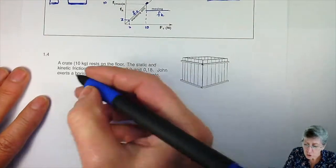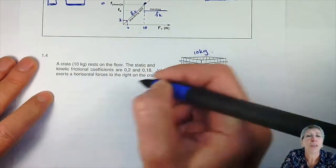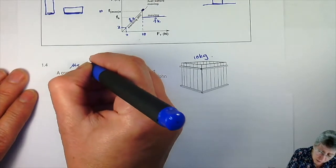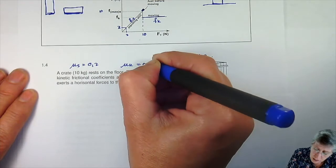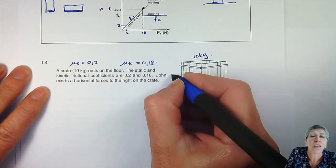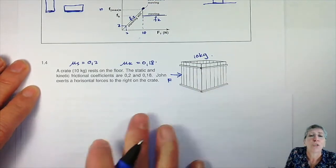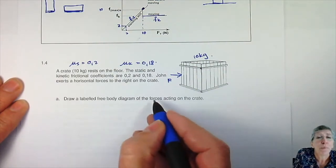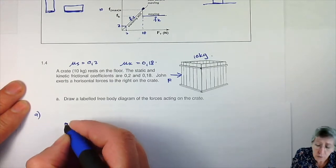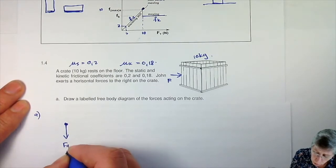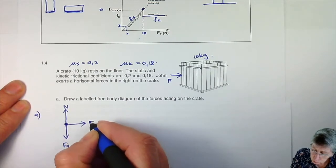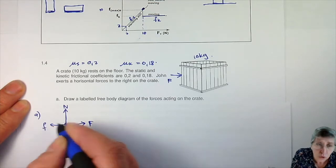In question 1.4, they're telling us a crate of 10 kilograms standing on the floor, with a static frictional coefficient mu s of 0.2 and kinetic frictional coefficient mu k of 0.18. John exerts a horizontal force to the right on the crate. First question: draw a labelled free body diagram of all the forces acting on the crate. You have gravity pulling the crate down, the normal force keeping it from sinking into the ground, the applied force by John to the right, and the frictional force to the left.